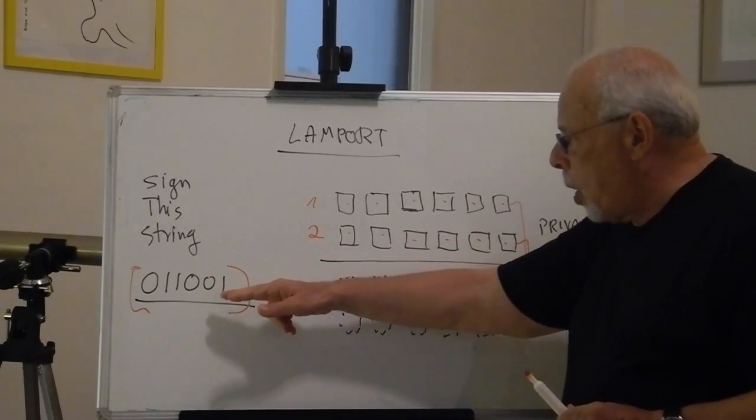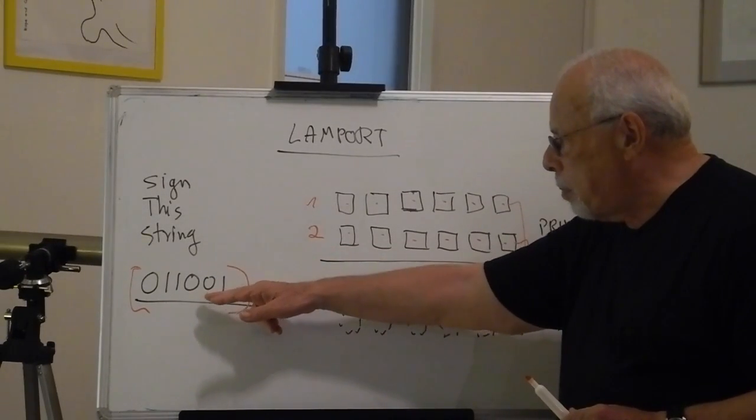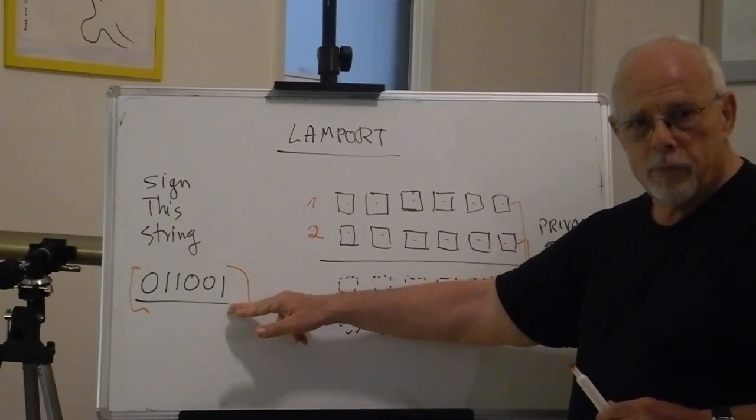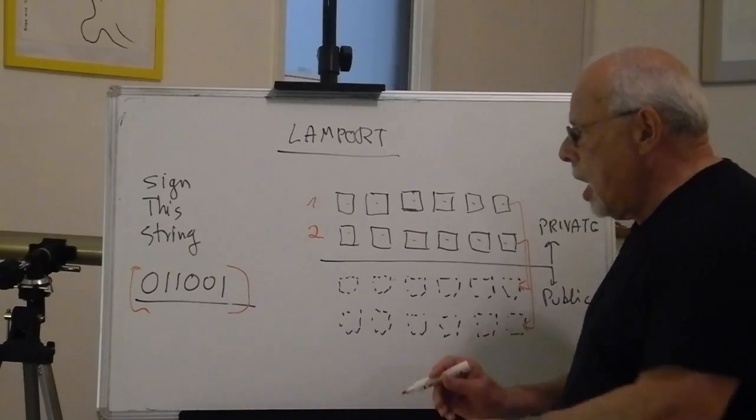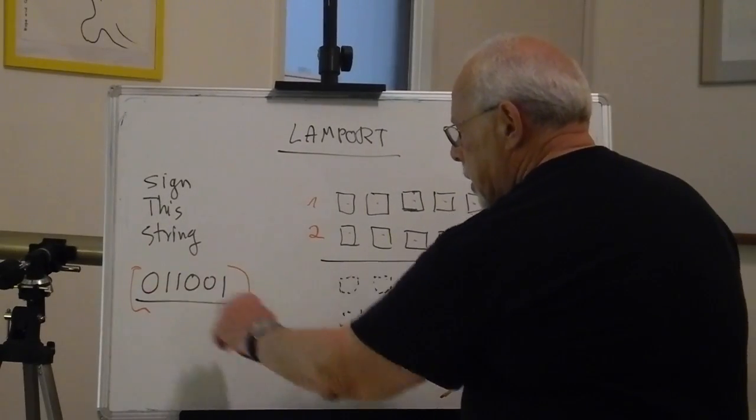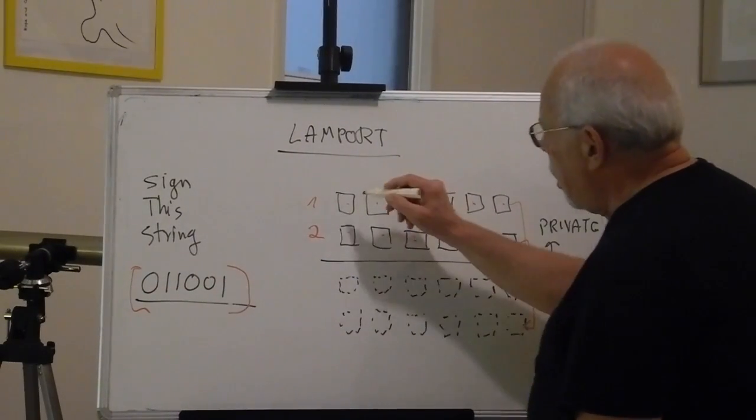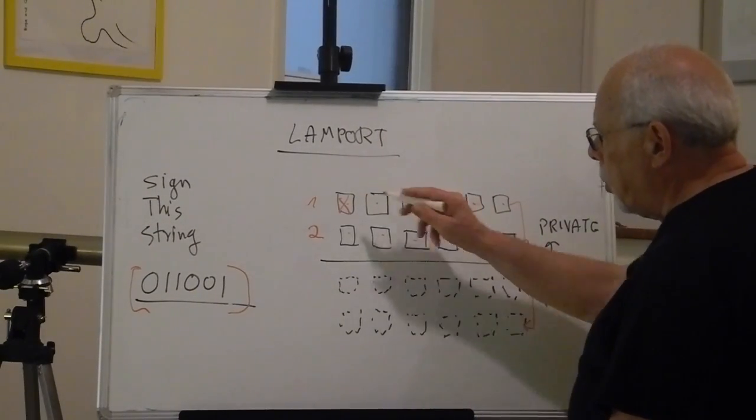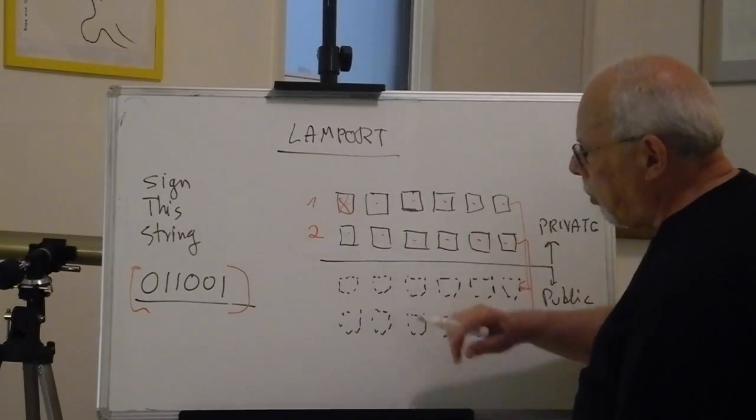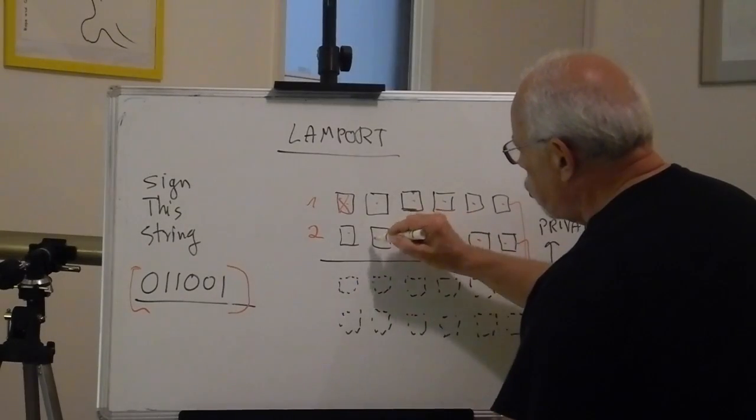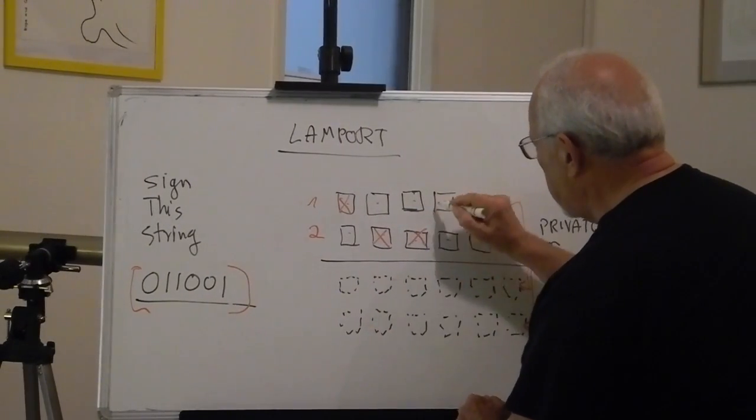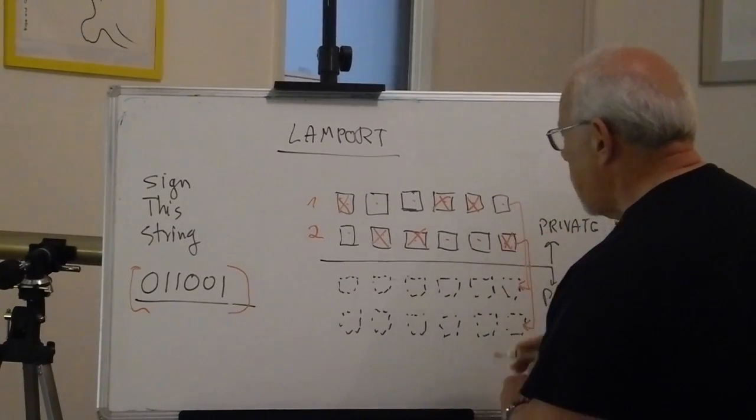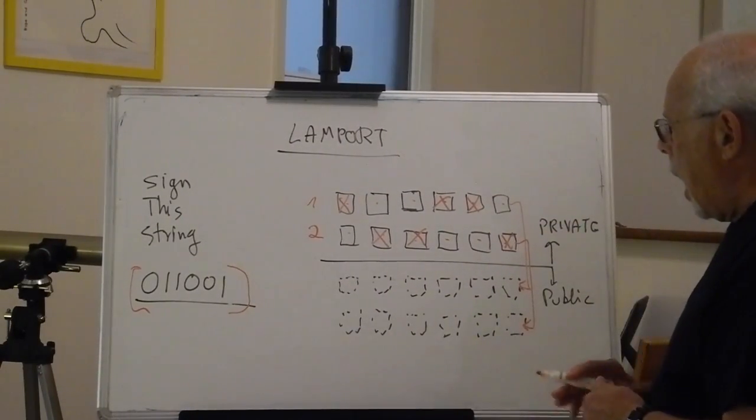Now, when Bob or anybody else submits this string to be signed, here is what Alice does. If this here is zero, she marks this number from the first pair. If this is one, she marks this one. One, one, zero, zero, one.